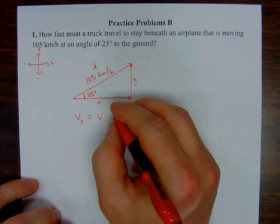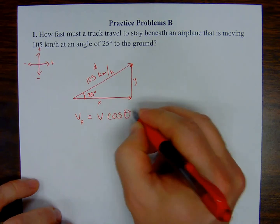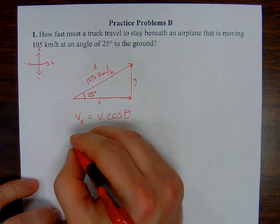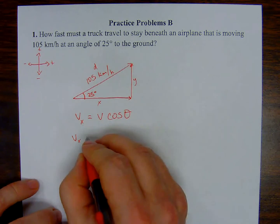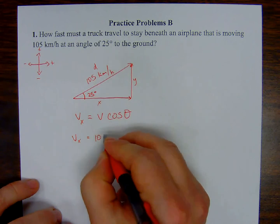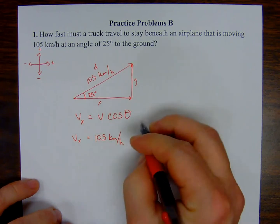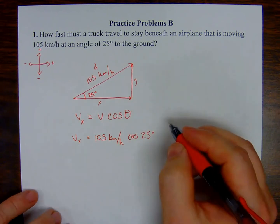And this is all I'm going to do. So my velocity of the x component is the velocity of the resultant multiplied by the cosine of the angle, which is 25 degrees. And again, two significant figures.